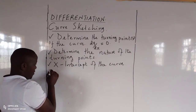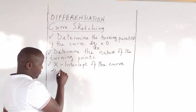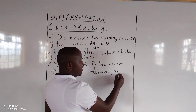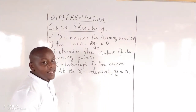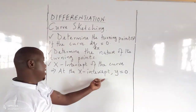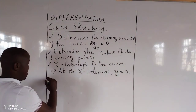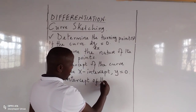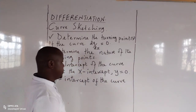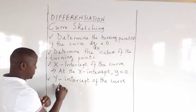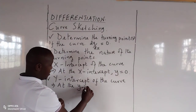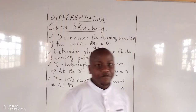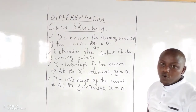You should know that at the x-intercept, the value of y is always zero. So we can be led by this idea into determining the x-intercept of a curve. And finally, the y-intercept of the curve. Something important to note is that at the y-intercept, x is always equal to zero. After you've done this, you can proceed to obtain a good sketch of your curve.